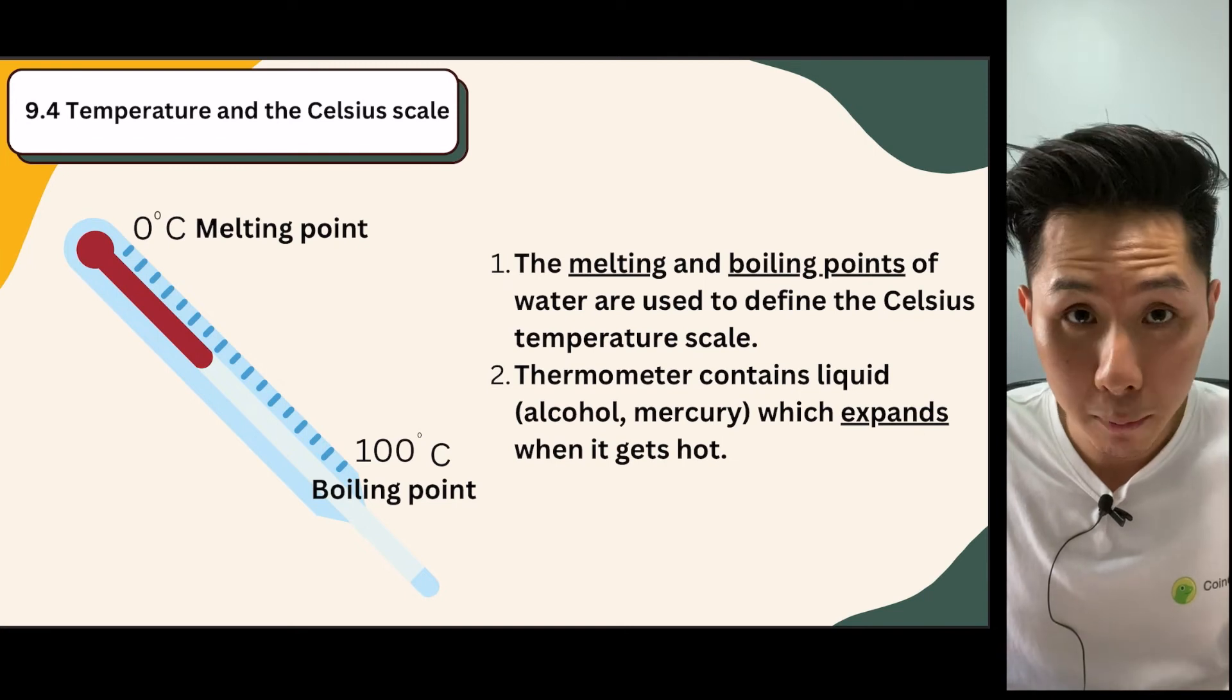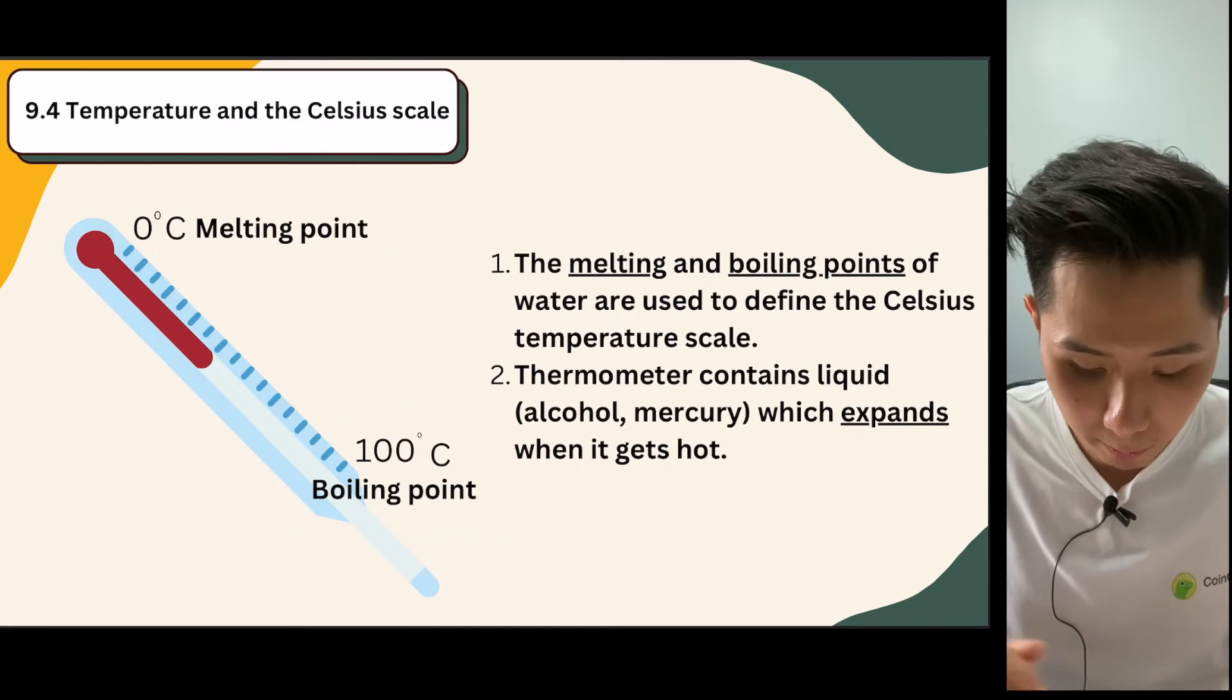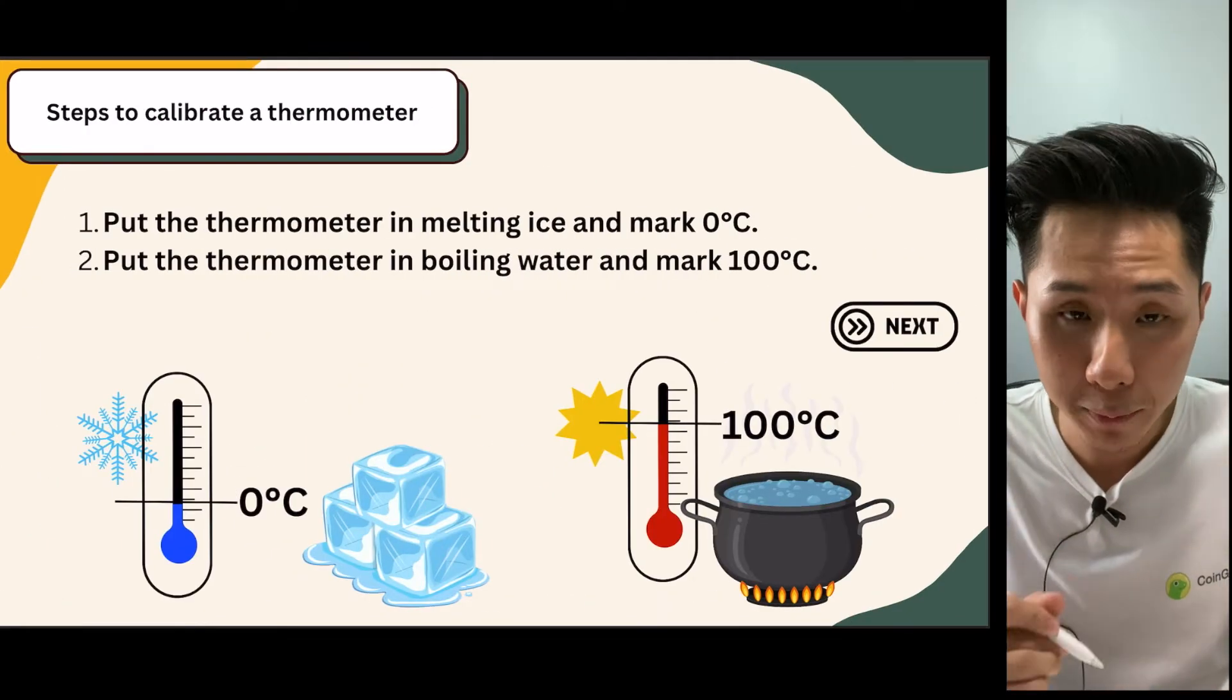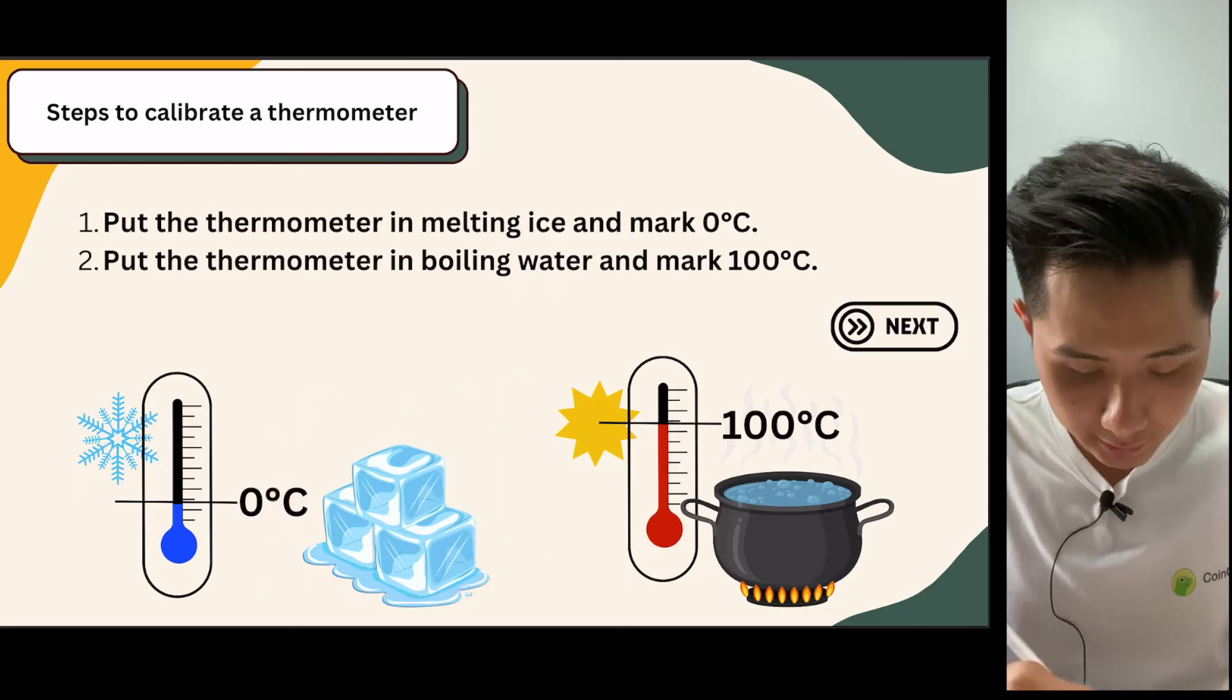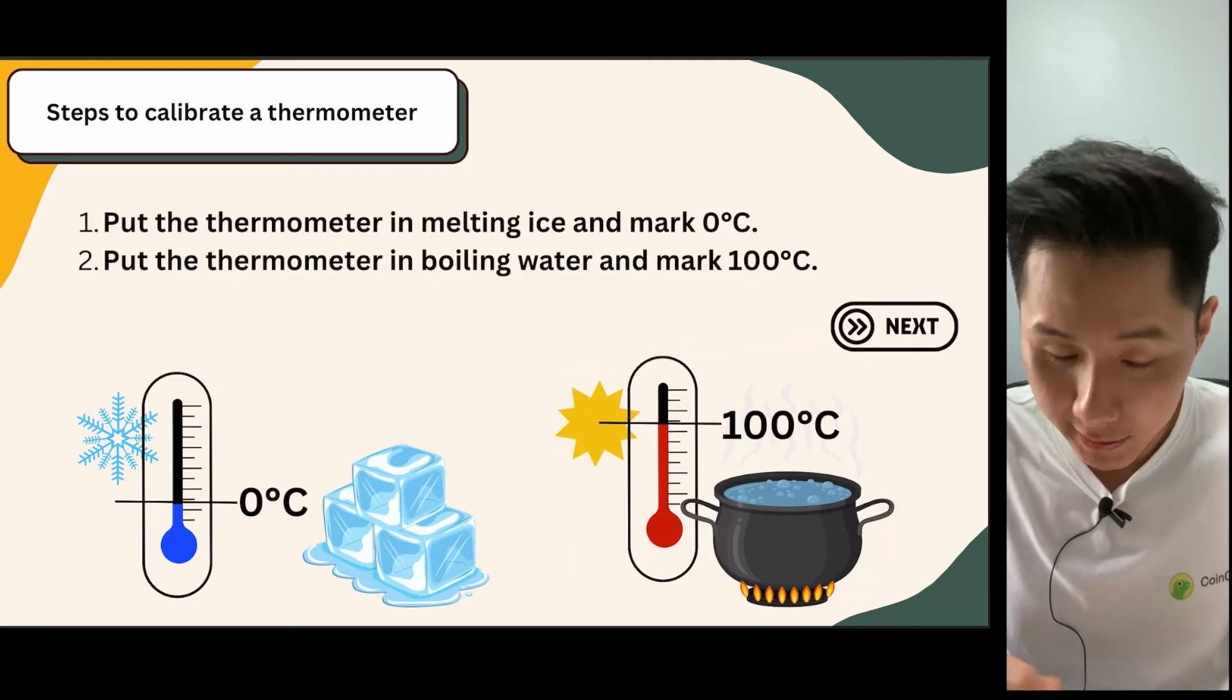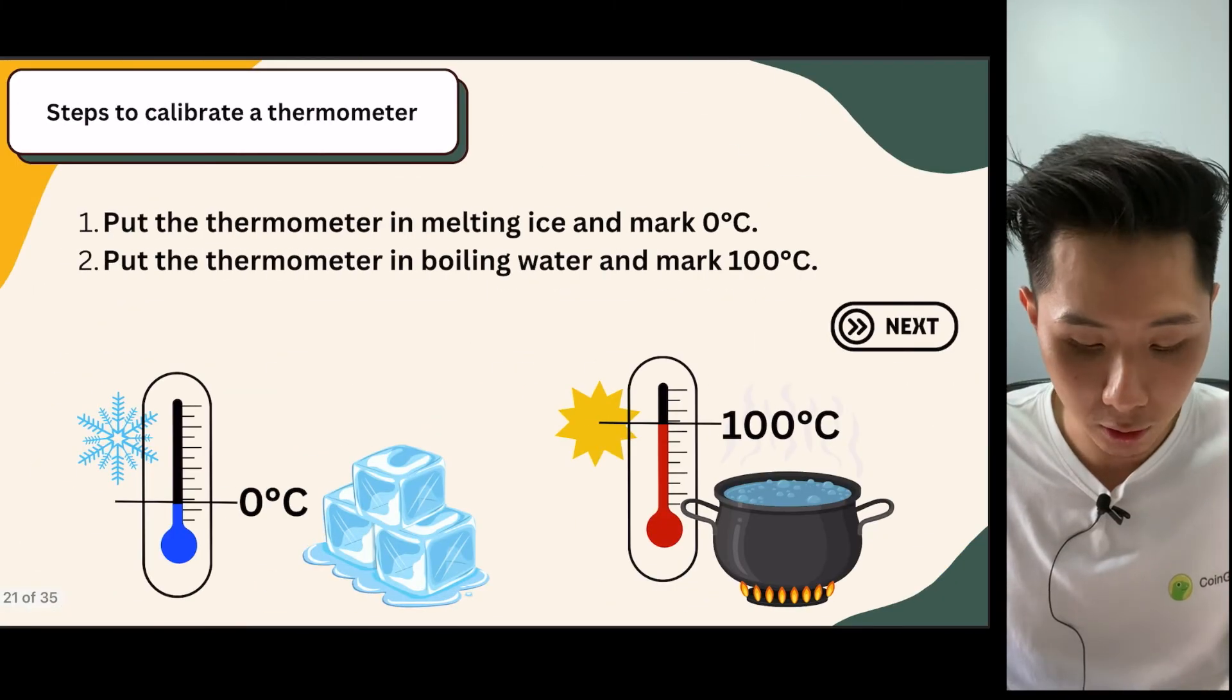So let's look into it. And when it comes to temperature, we know that there is something called a melting point, and also the boiling point. So the melting point is the temperature which the solid starts to melt, which means the particles start to break down. Whereas the boiling point is the temperature which the liquid starts to get boiled into gas particles.